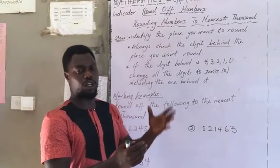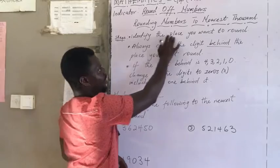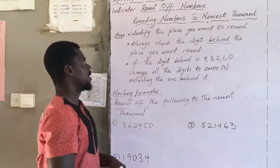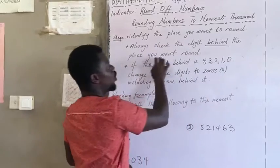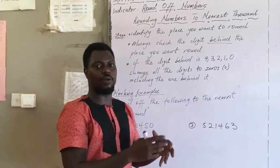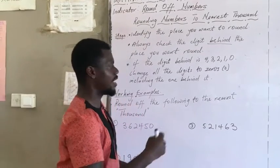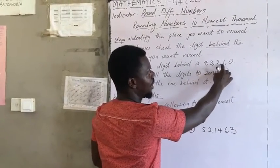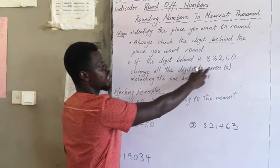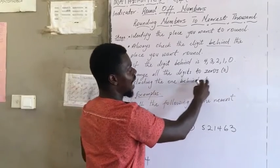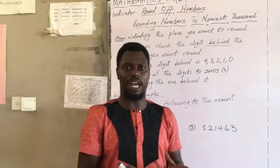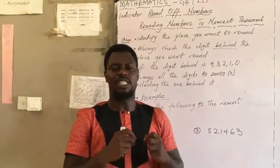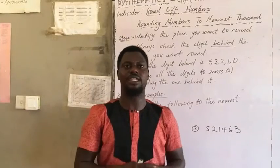We are going to follow the same steps as before. Step one: identify the place you want to round. Step two: always check the digit behind the place you want to round. Step three — the most important part today — if the digit behind is four, three, two, one, or zero, change all the digits behind to zero, including the one behind the place you want to round.